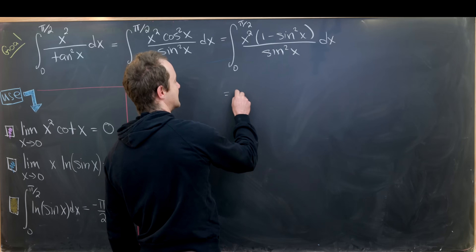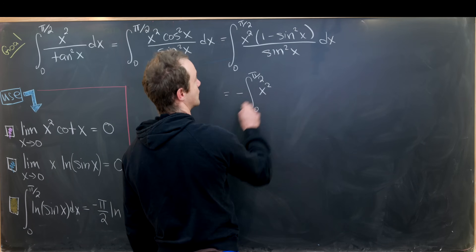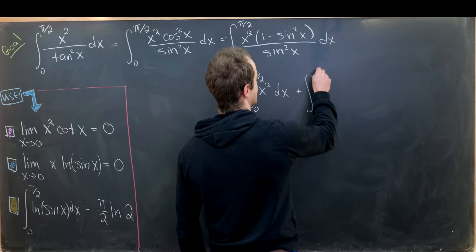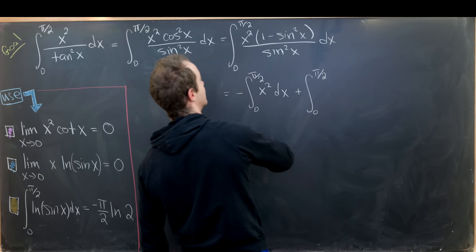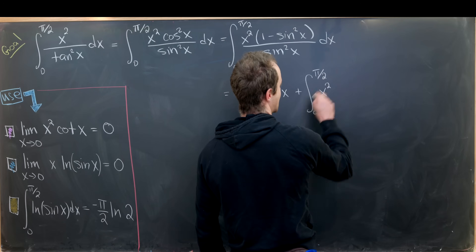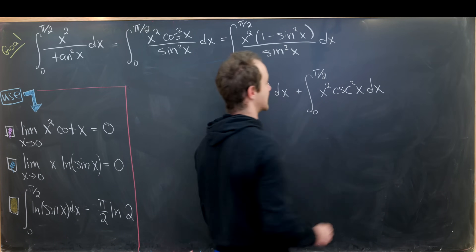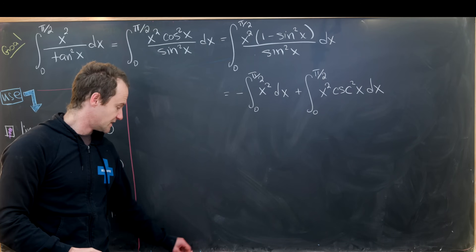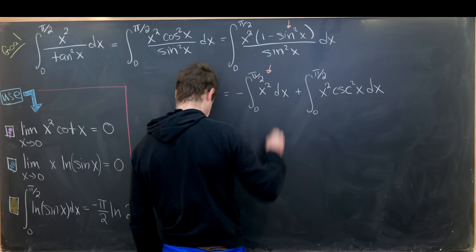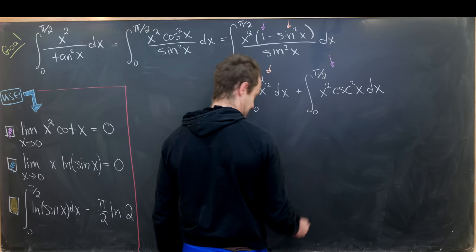Noticing that the sin² cancels in one term motivates splitting into two parts: minus ∫₀^{π/2} x² dx plus ∫₀^{π/2} x²·csc²(x) dx. The cancellation gives the simple x² integral, and the remaining term gives the cosecant-squared integral.